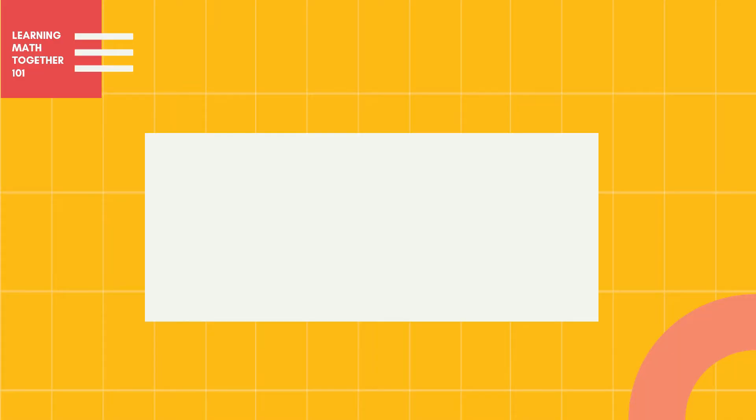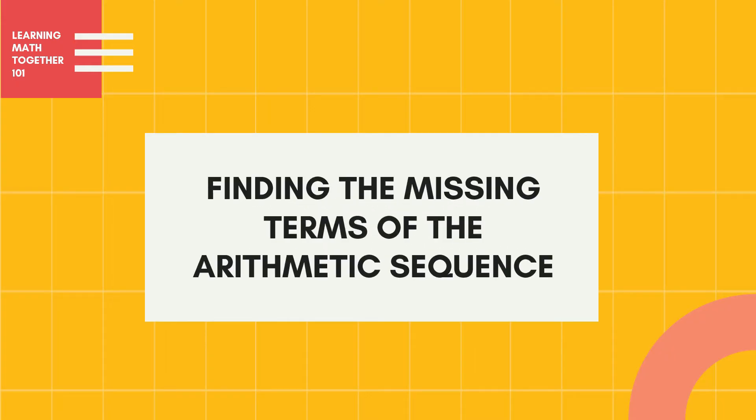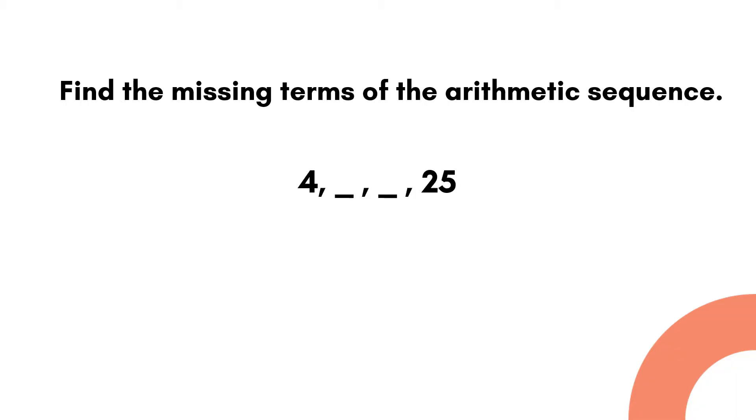Good day everyone. For today's video, we'll be finding the missing terms of the arithmetic sequence. Let's have an example. Find the missing terms of the arithmetic sequence: 4, two missing terms, and 25. We are going to find the two missing terms between 4 and 25.